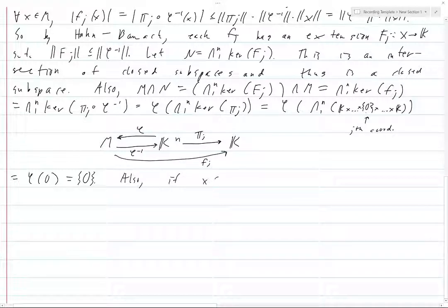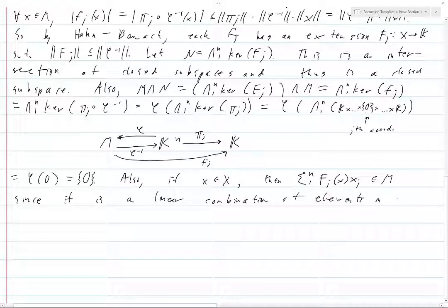Also, if x is in X, then certainly this thing here that I've just kind of magically pulled out of thin air, this is a sum, this is a linear combination of things. This is aⱼ, not a semicolon. This is a linear combination of, well, this is in M, since it is a linear combination of elements in M.